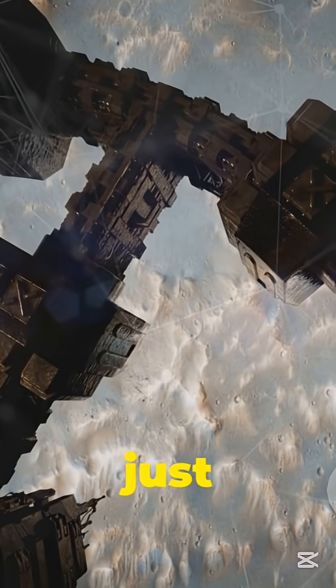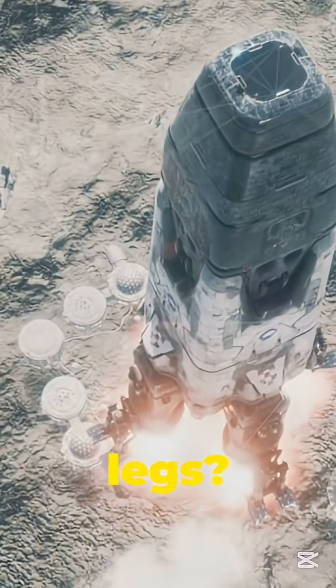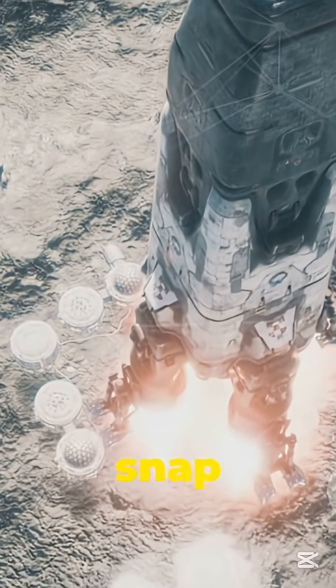NASA's newest Mars lander isn't just smart. It's engineered like it's preparing for war. Its legs, built to absorb impacts that would snap a car in half.